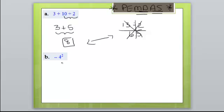How about the next one? We're supposed to get rid of our exponents. Remember, there's no parenthesis, so we keep the negative. 4 squared is 16.